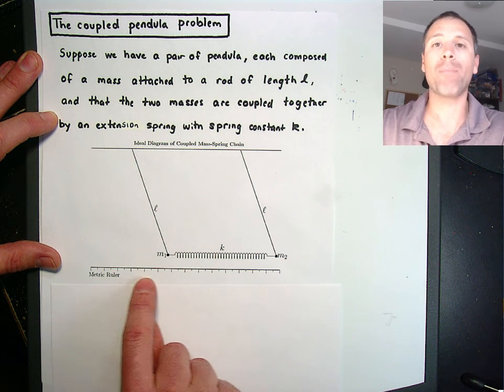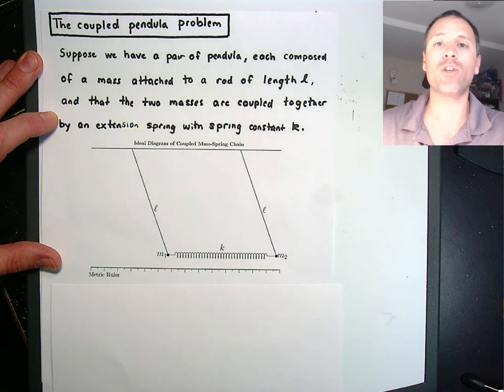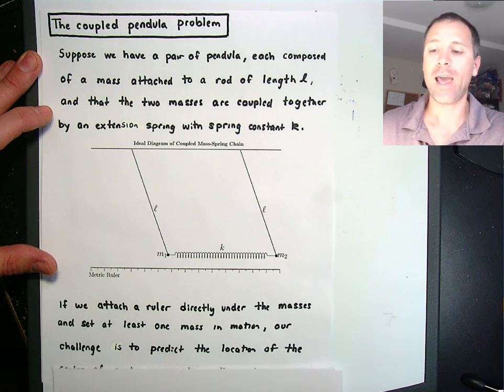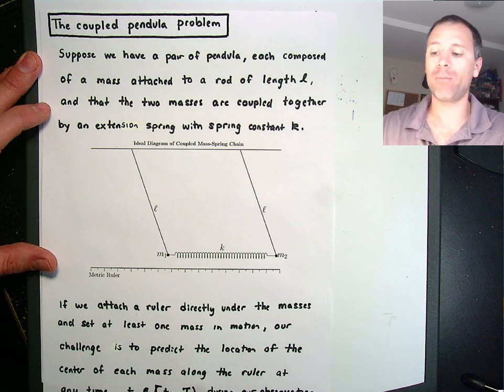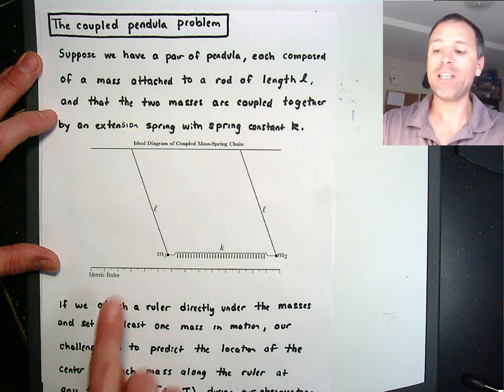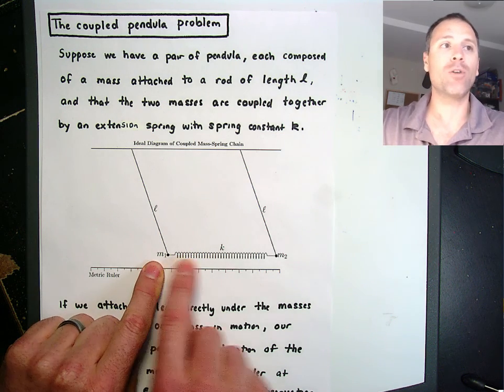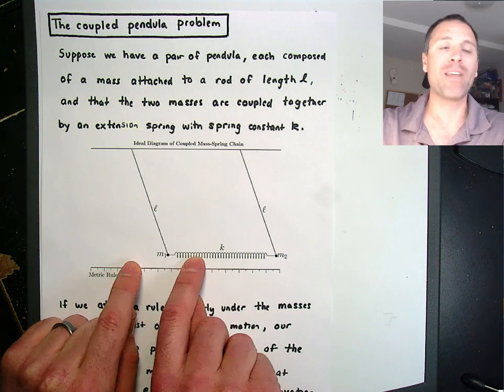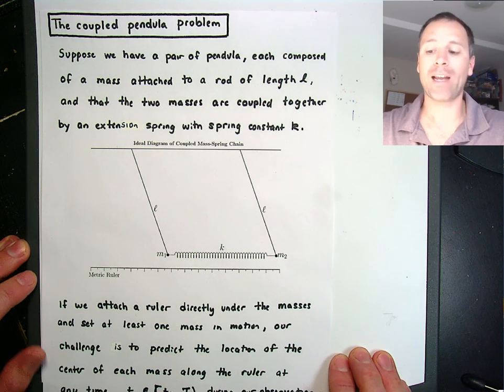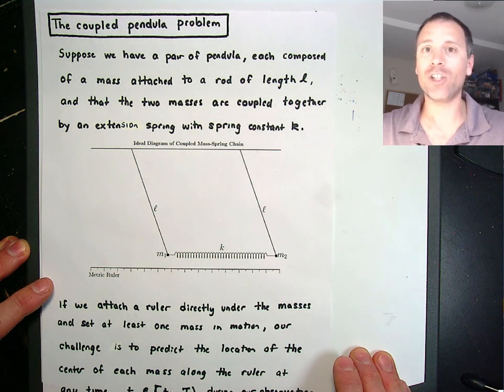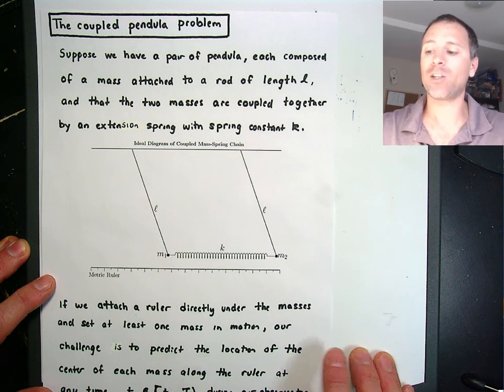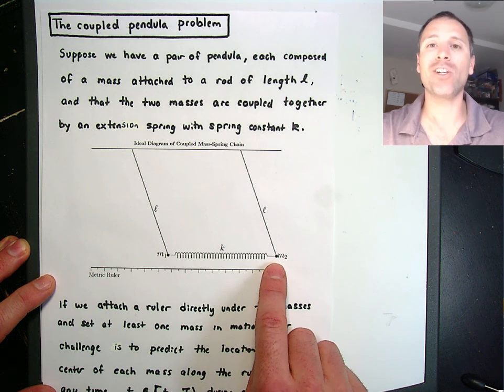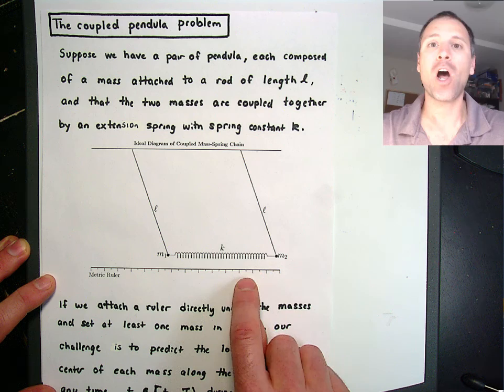We attach a ruler below the masses that we can use to measure positions, and then the coupled pendulum problem is if we set one of these masses into motion, so if I take the right mass and move it, and then let the entire system swing back and forth, our challenge, if we choose to accept it, is to predict the exact location of each center of mass along the ruler.